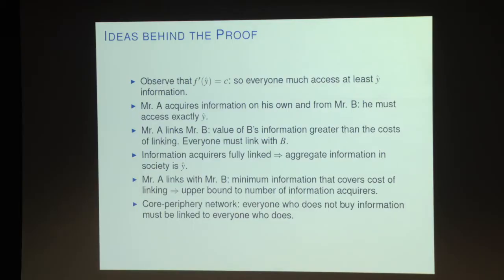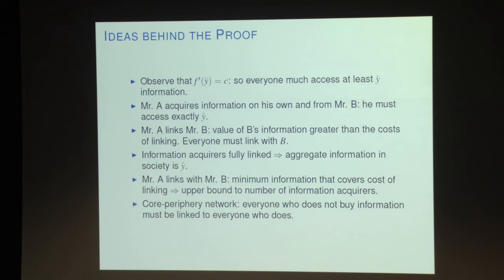What are the ideas behind why any stable configuration is going to have a core-periphery structure? The first observation in the proof is to note this number y-hat, which is the point at which the marginal return to information, given by f-prime of y-hat, is exactly equal to the cost of buying information, c. If I would buy information myself, I would buy y-hat and be content because f is concave — if I bought more than y-hat my marginal return would be smaller than the cost, and if I bought less I could do better by buying a little more.